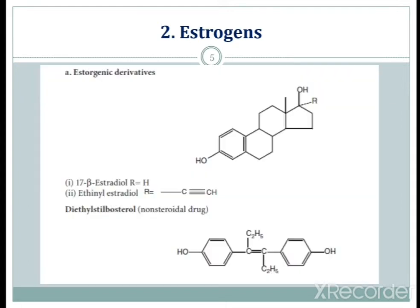The structures of estrogens are given here with the basic steroidal nucleus. For 17-beta estradiol, R equals hydrogen. For ethinyl estradiol, at the R position there is a C triple bond CH group. These are the two steroidal estrogen derivatives used as anti-cancer agents. Diethylstilbestrol is a non-steroidal drug — you can see its trans structure with a C double bond C, with two ethyl groups and phenol rings in opposite positions.